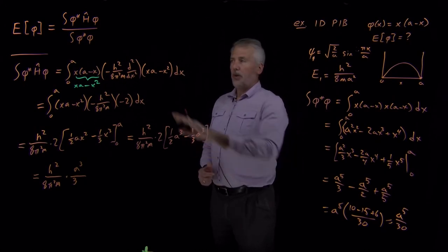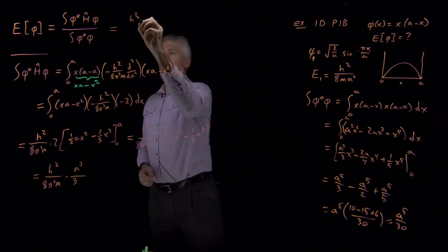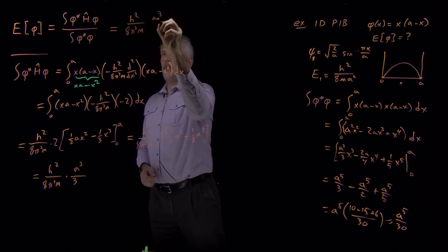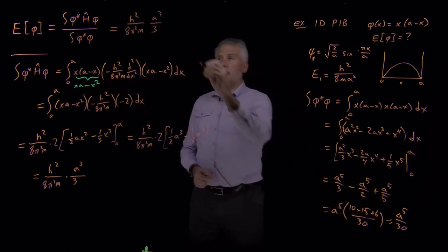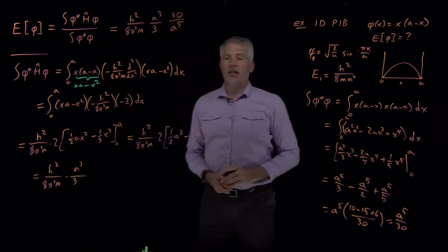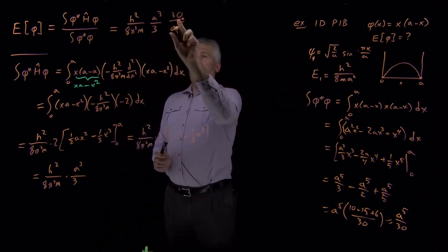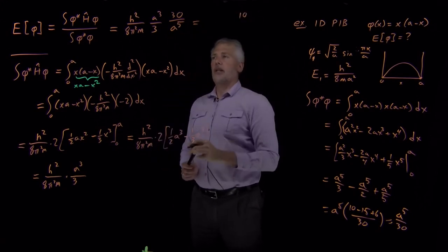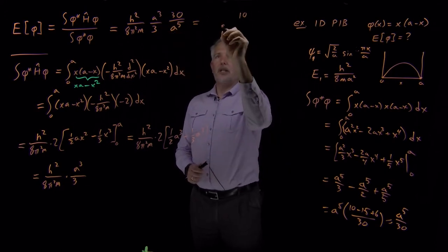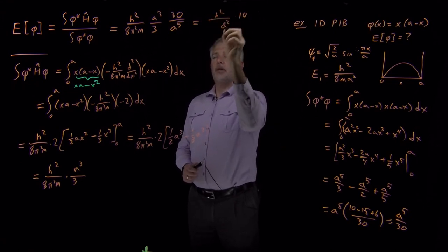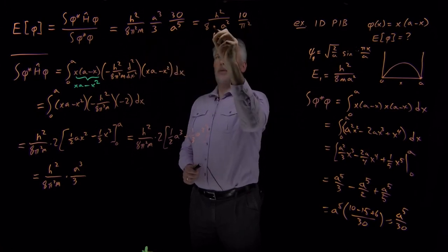The final step is to compute the variational energy as numerator divided by denominator. The numerator is h squared over 8 pi squared times mass, times a cubed over 3. Dividing by the denominator a to the fifth over 30: the 3 and 30 cancel leaving 10, and a cubed cancels three of the five powers of a, leaving a squared in the denominator. This gives h squared times 10 over 8 pi squared times mass times a squared.